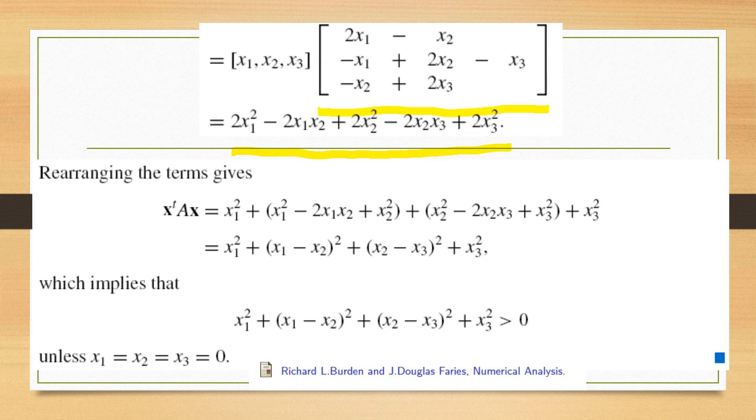Now we have to show that this is positive. In this expression we cannot determine whether it is positive or negative because these are five terms which involve negative signs and positive signs.